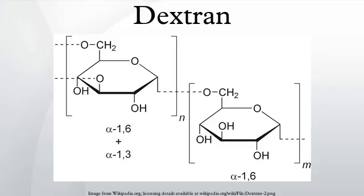The straight chain consists of α-1,6 glycosidic linkages between glucose molecules, while branches begin from α-1,3 linkages.